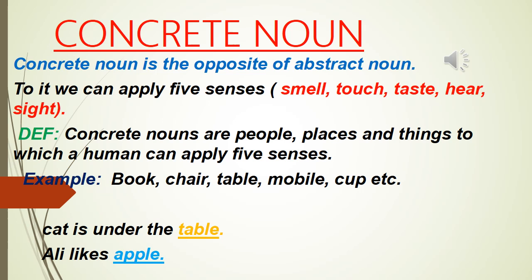The five senses are smell, touch, taste, hearing, and sight. Concrete nouns are people, places, and things to which a human can apply the five senses — things a human can see, touch, taste, hear, or smell. For example: book — you see it, touch it, and often smell it. Chair, table, mobile, cup, etc. are all concrete nouns.